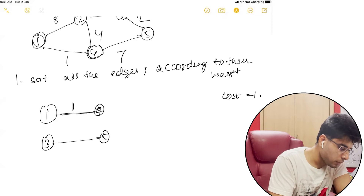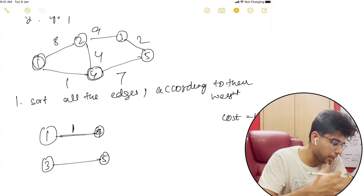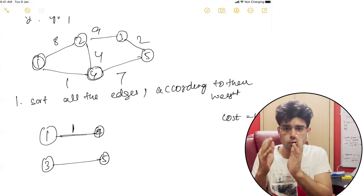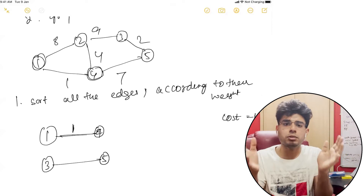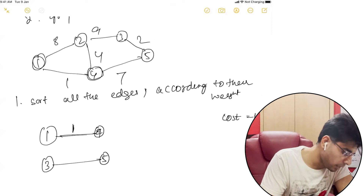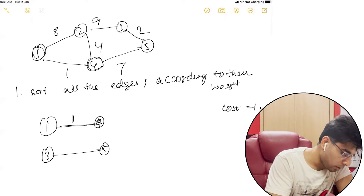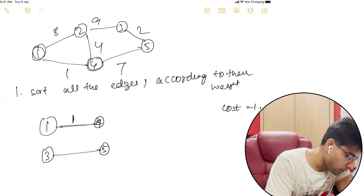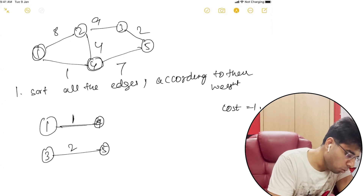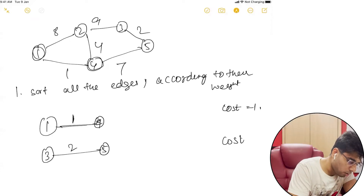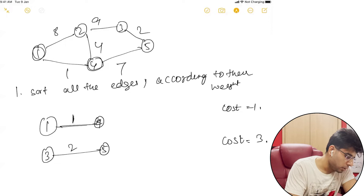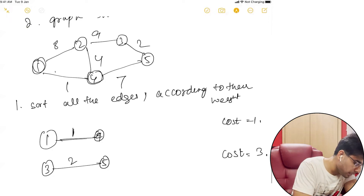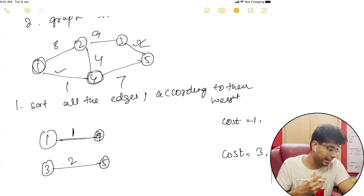So we will take this edge as well. We have sorted the edges and are now traversing through them one by one. The cost is now 1 plus 2, that is 3. This edge is being taken.